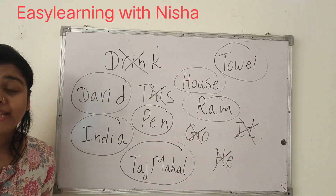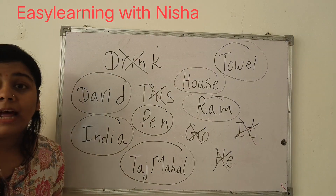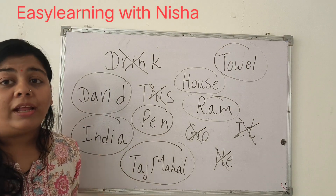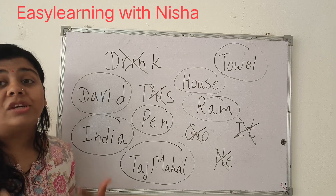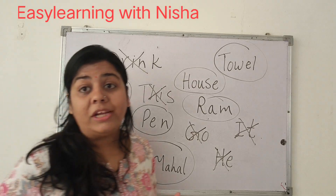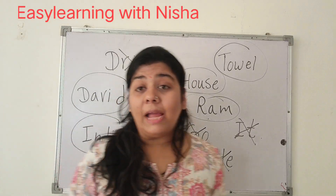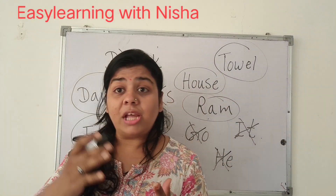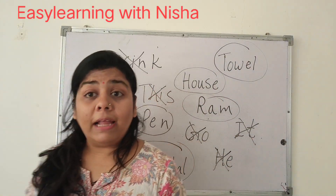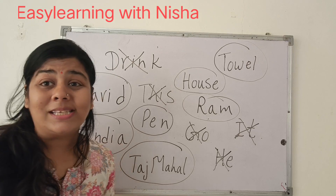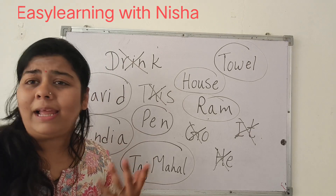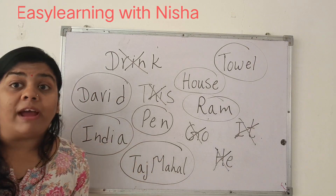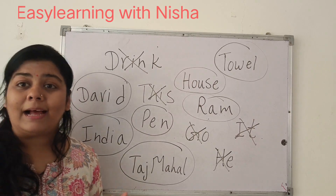Very good, you did a great job! It means now you understand what nouns are — the name of a person, place, or a thing is called a noun. In our next video I'm going to teach you the types of nouns. There are eight types in total, but we will learn them one by one.